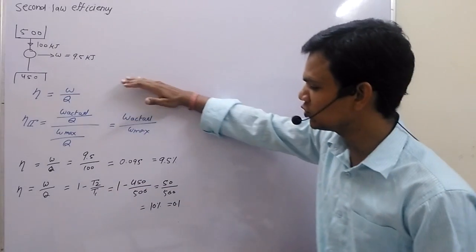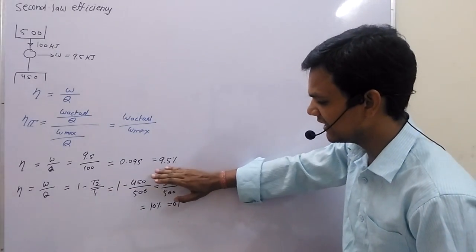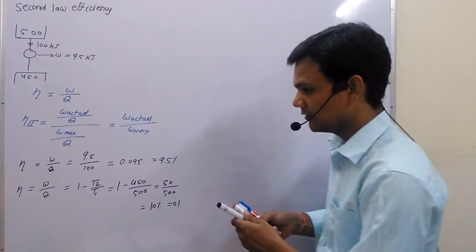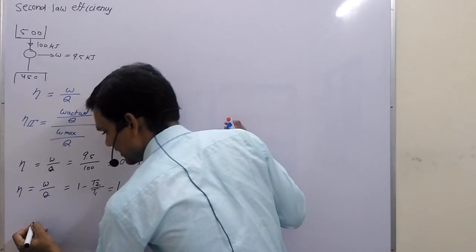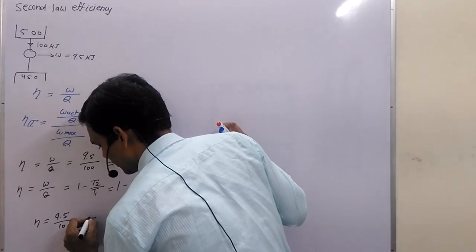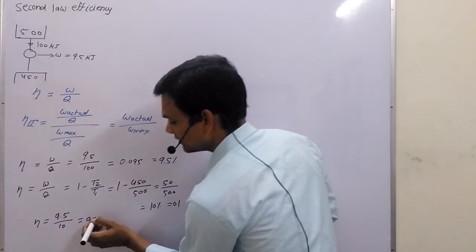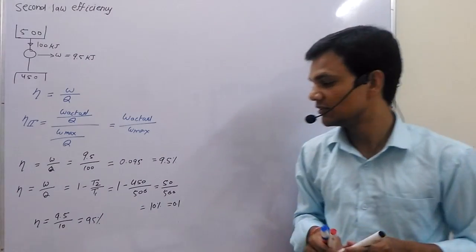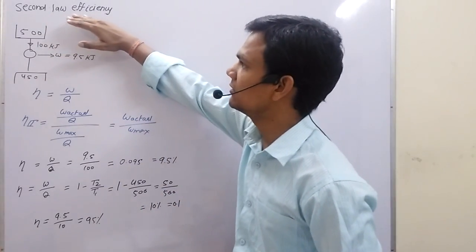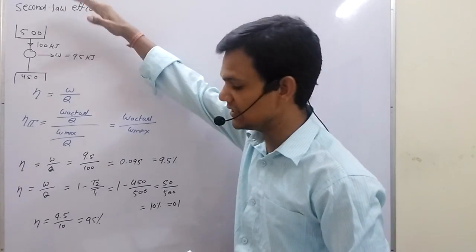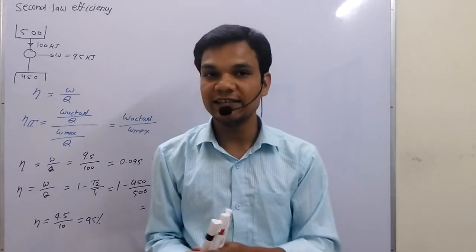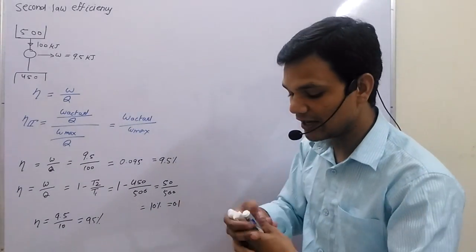In the actual situation, the efficiency of the engine is 9%, and in the best possible case the efficiency is 10%. So we conclude from the secondary efficiency that the efficiency of the engine is 95%. By using secondary efficiency, we know how the actual efficiency compares with the best possible case we are working with.